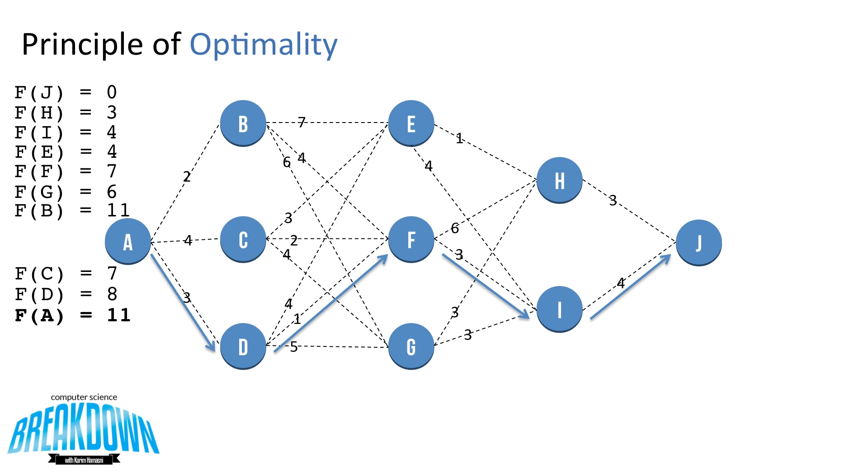This is definitely improvement over the 13 path that we discovered earlier through our naive greedy algorithm. Now, let's take a look at the path that it takes. We can go from A to D, D to F, F to I, and I to J.